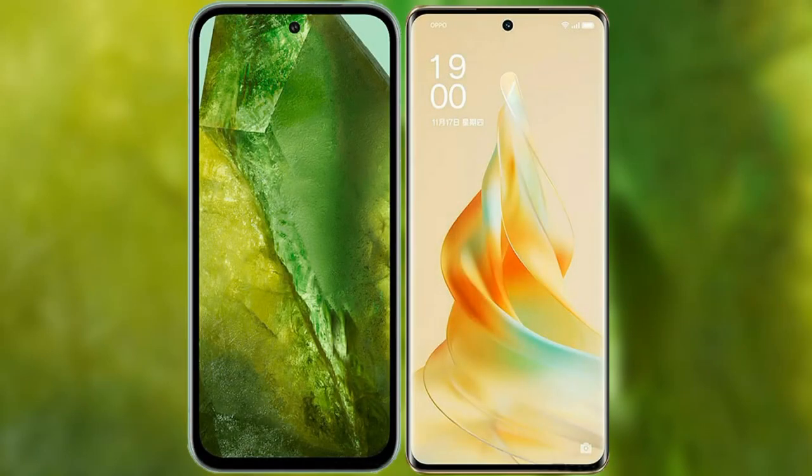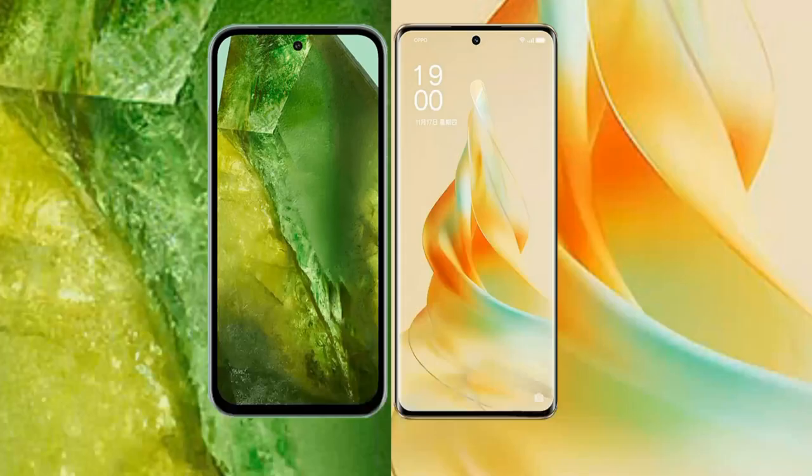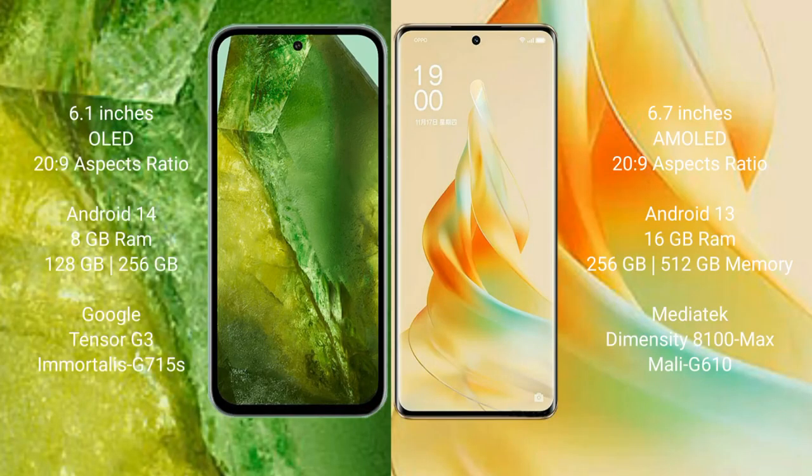I will compare the new Google Pixel 8a with OPPO Reno 9 Pro. Google Pixel 8a comes with a 6.1-inch OLED display and 20:9 aspect ratio. OPPO Reno 9 Pro comes with a 6.7-inch AMOLED display and 20:9 aspect ratio.